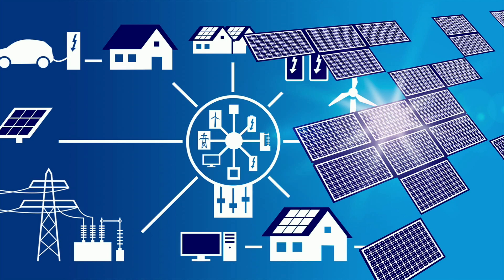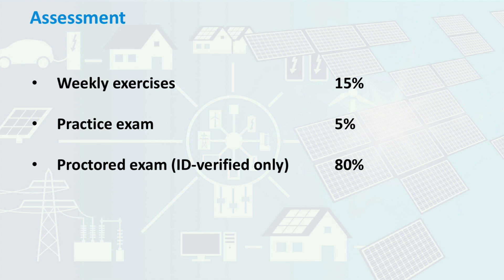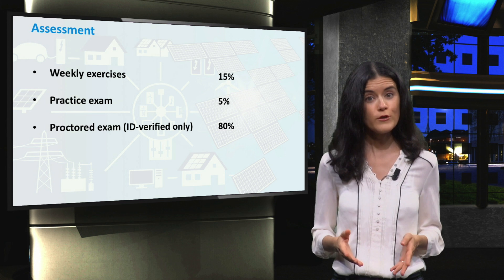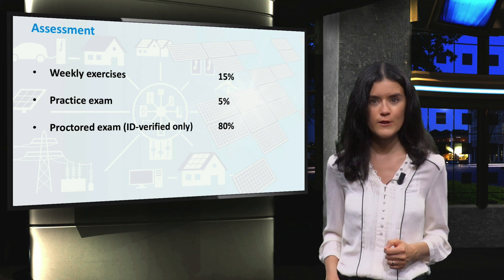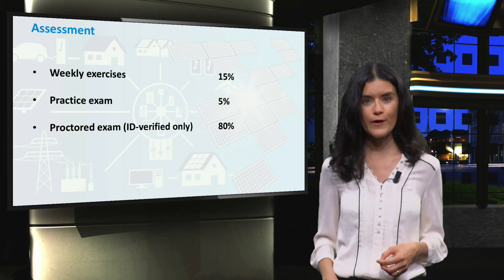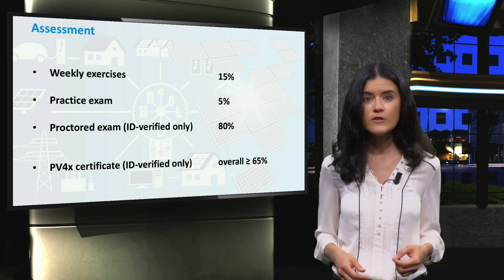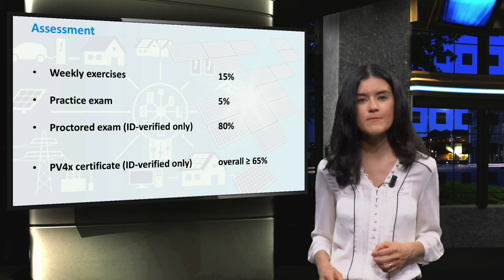Now the assessment. Following most of the video lectures, you will find exercises to apply your newly gained knowledge. These exercises are meant to test and improve your understanding of the concepts discussed in the videos, so try these exercises and don't be afraid to make a mistake. All the weekly exercises combined count for 15% towards your final grade. The practice exam counts for 5% of your final grade, and it is meant for students to practice and get familiar with the format of the proctored exam. The proctored exam is only available to ID verified students and counts for 80% towards your final grade. You can qualify for the PV4X Verified Certificate by achieving a minimum final score of 65%.